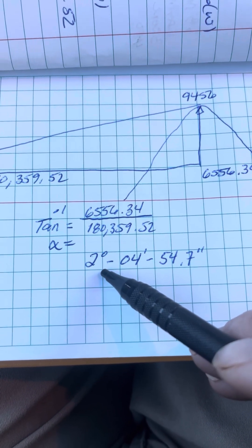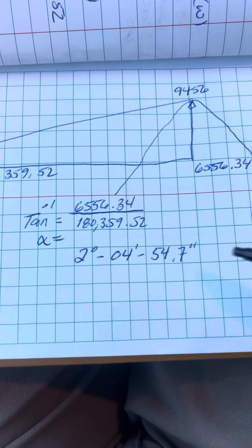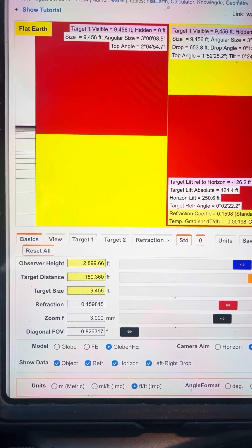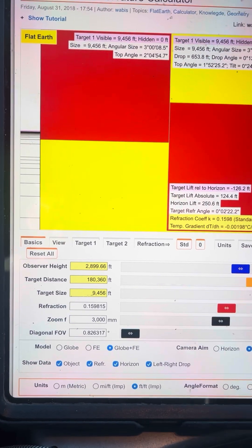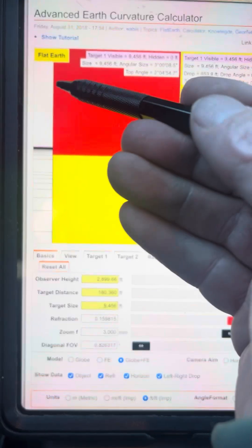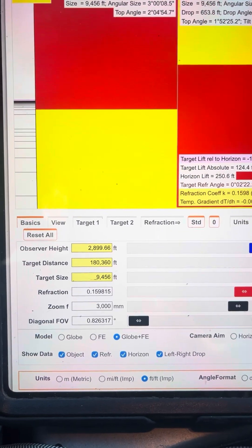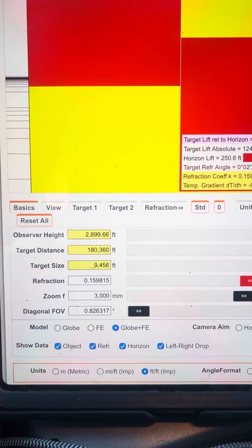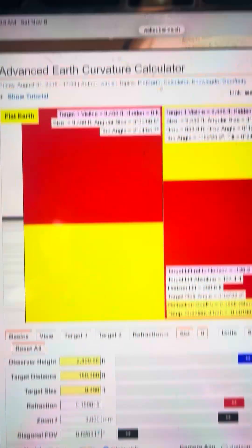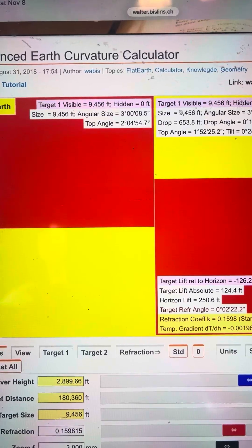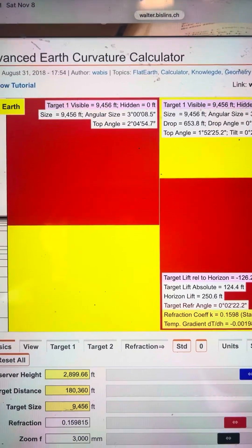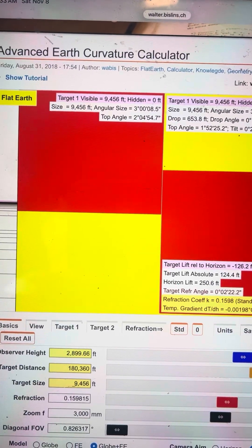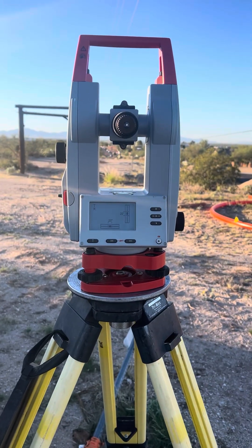Flat earthers love to say that earth curvature calculators don't match reality, so here we are. This is reality. Here is the flat earth, there's my total observation height of 2,899.66, that's my target distance, and that's Mount Wrightson. I calculated 2 degrees 4 minutes and 54.7 arc seconds, and Walter Bislin calculated the same for the flat earth prediction. Now let's see if the earth actually measures flat.